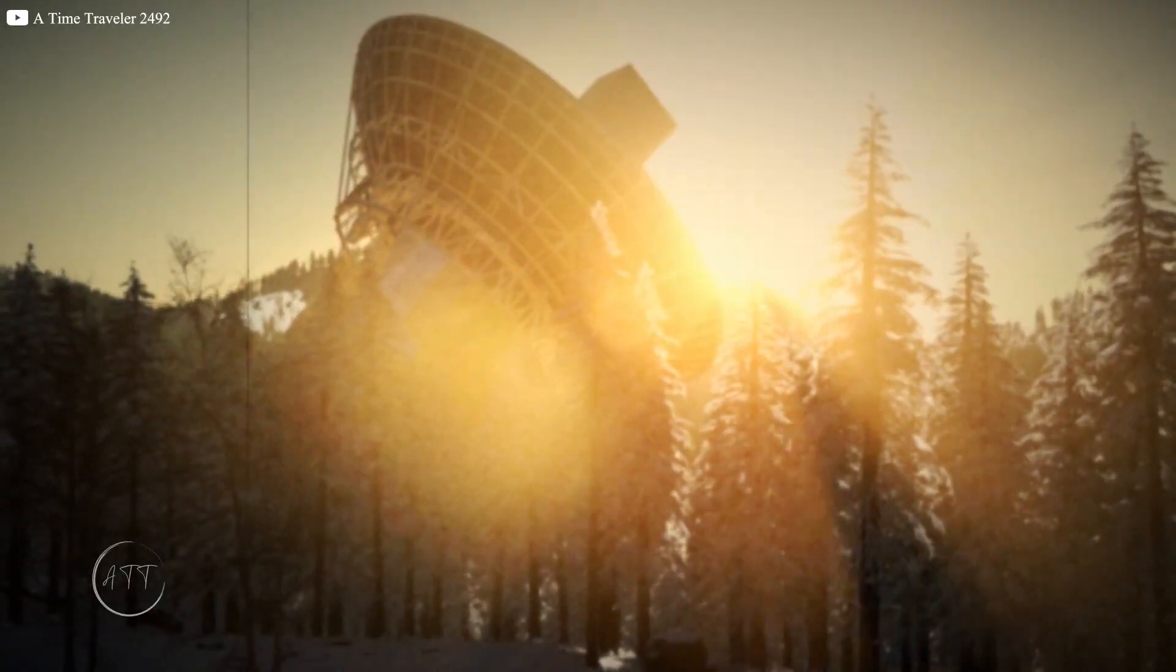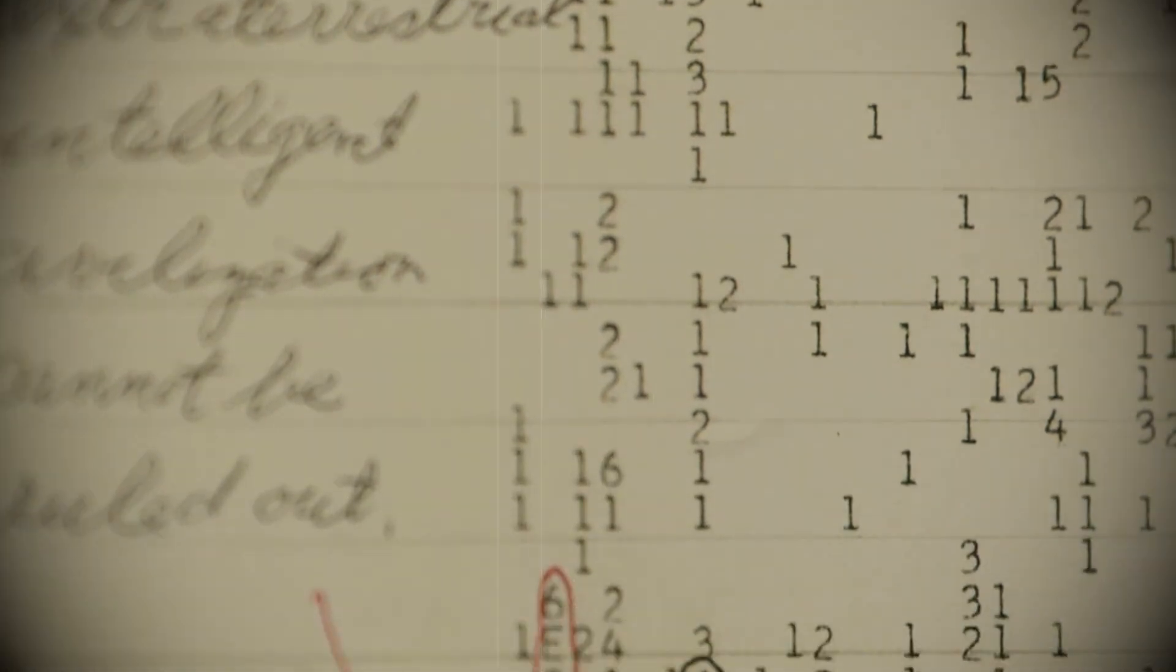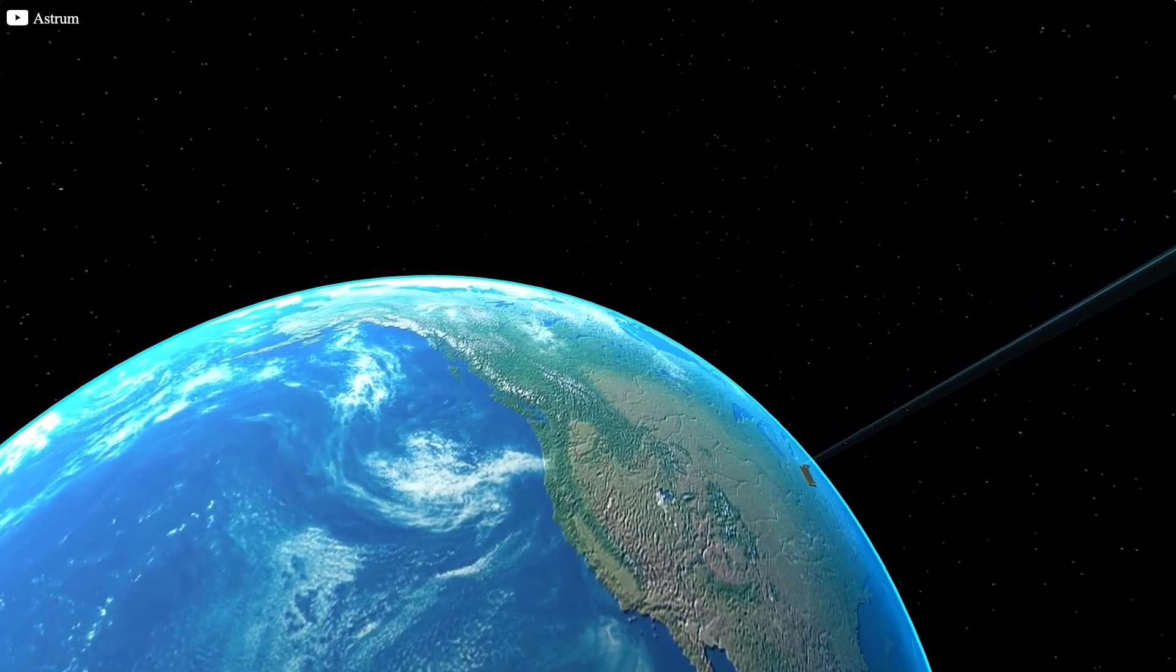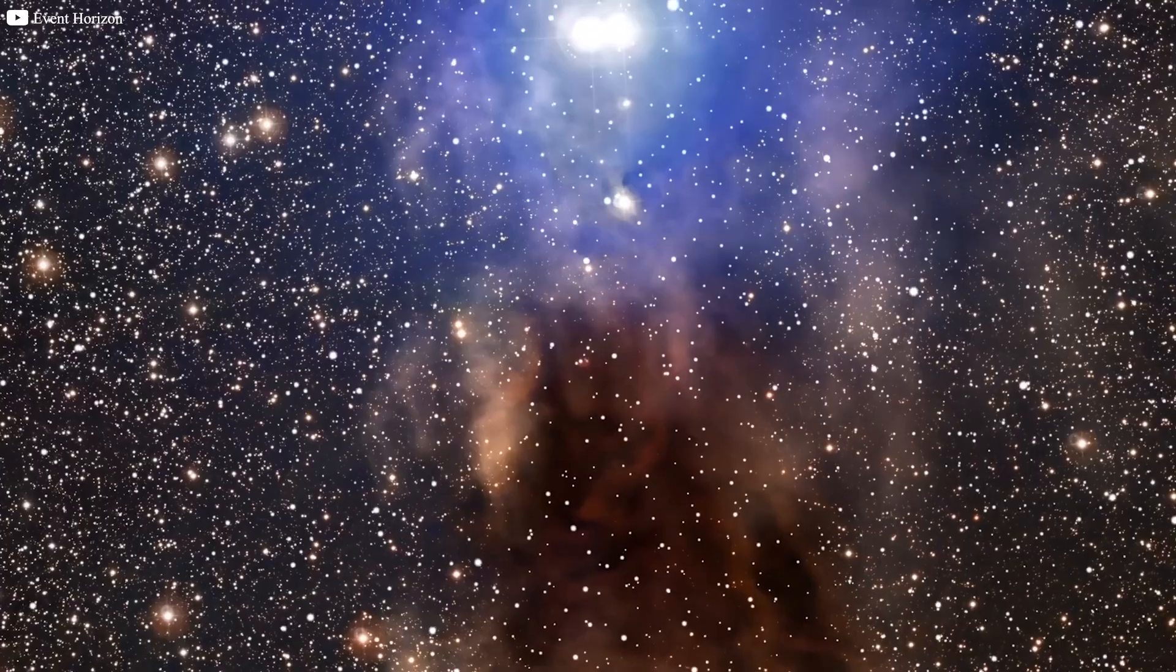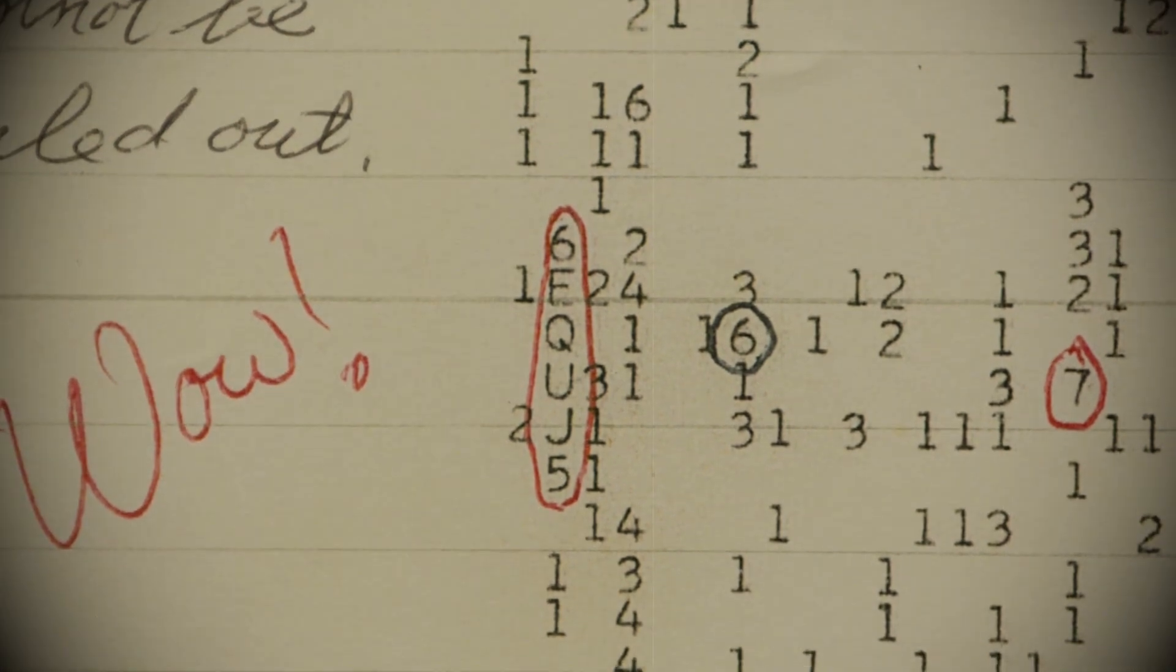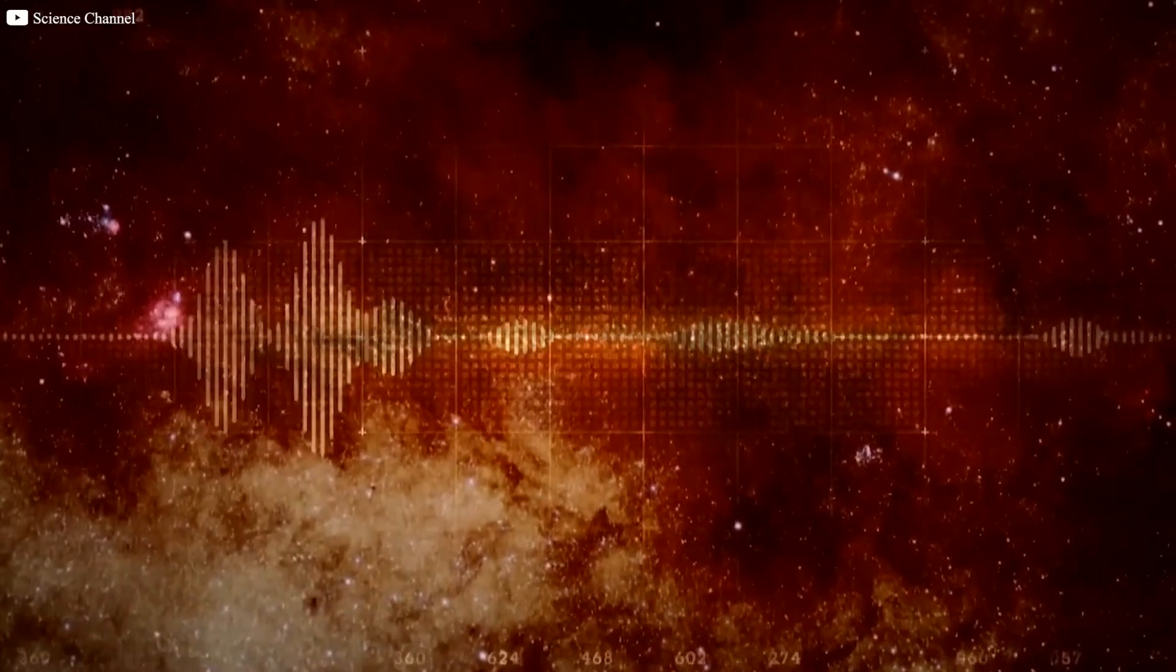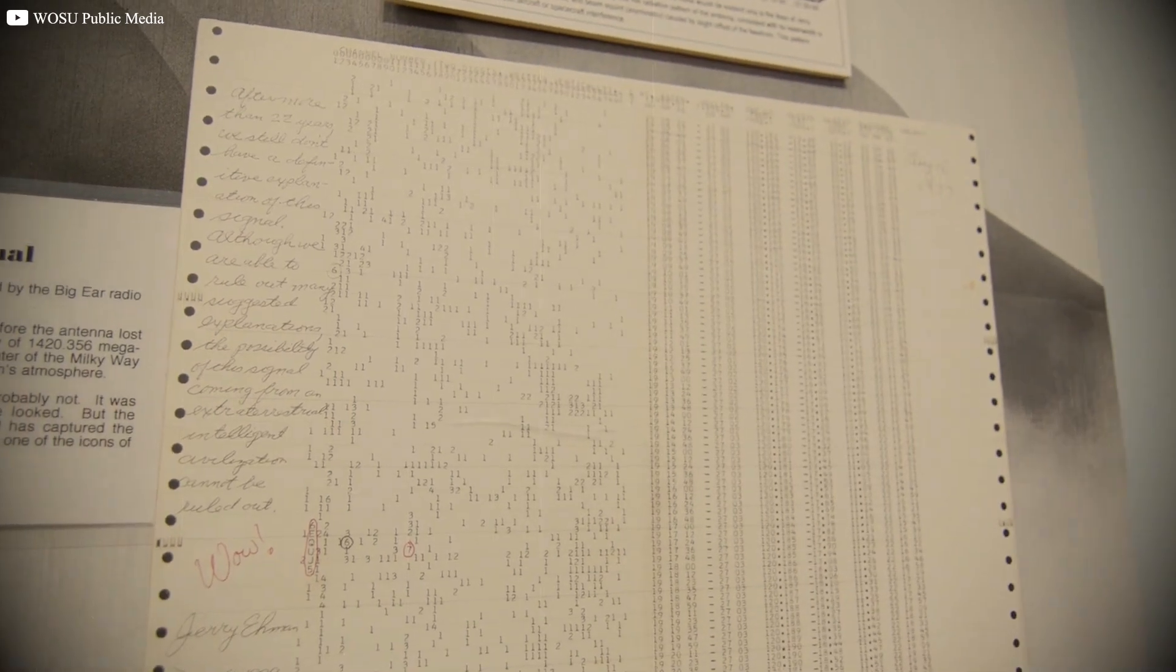Astronomer Jerry Amon was running routine observations when he noticed something unusual. A string of characters stood out on the printout: 6EQ-UJ5. It was a signal 30 times stronger than the background cosmic hum, specifically at 1420 MHz, a frequency tied to hydrogen, the most abundant element in the universe. Without hesitation, Amon circled the strange sequence with a red pen and wrote 'wow' in the margin. That single exclamation would go on to define the most baffling cosmic event of the century, sparking debates and theories that still echo today.